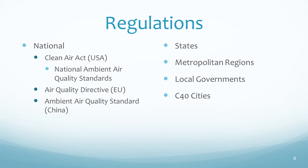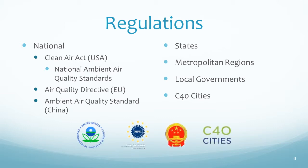Since it is nearly impossible to remove air pollutants from ambient air, the best way to reduce air pollution is to prevent it altogether. Most developed nations have national regulations that set air quality standards, and in the U.S., the Clean Air Act sets them. C40 Cities is a network of major world cities that have all pledged to reduce air pollution and increase sustainability.